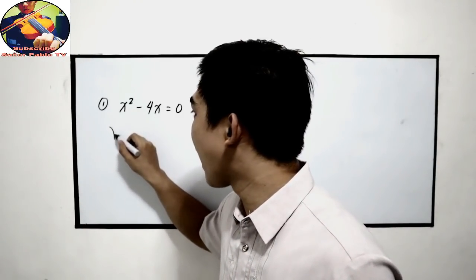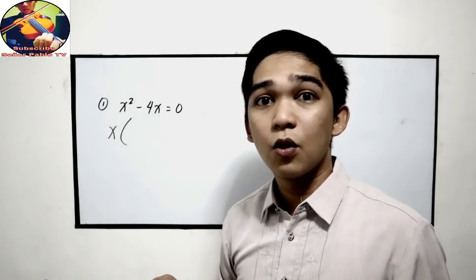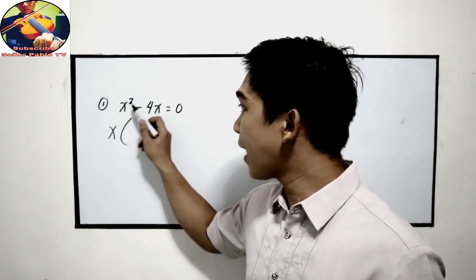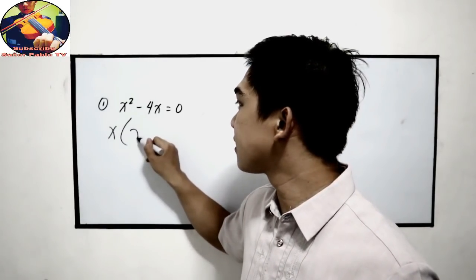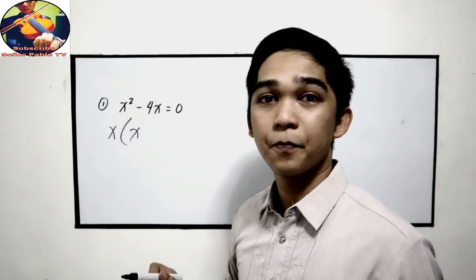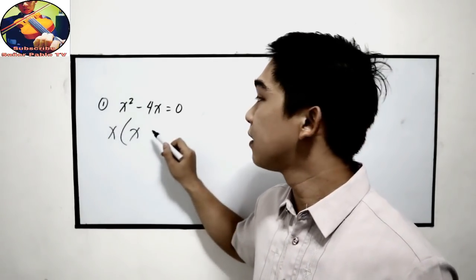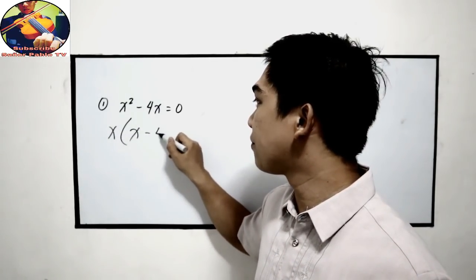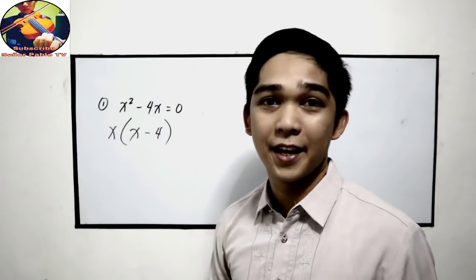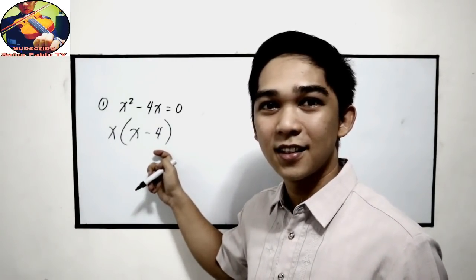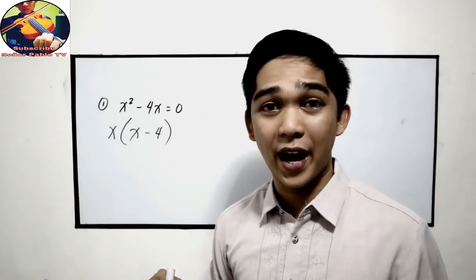That means x times the other factor — we need to divide. x squared divided by x is x. Negative 4x divided by x is negative 4. That is the other factor. You can also check whether your factors are correct.